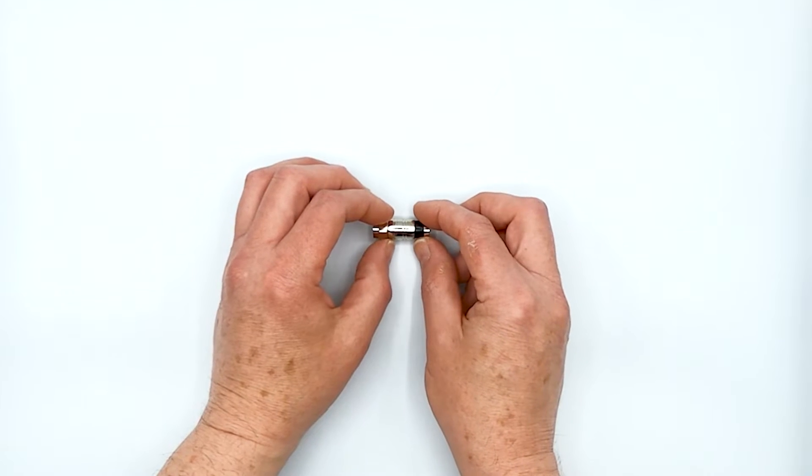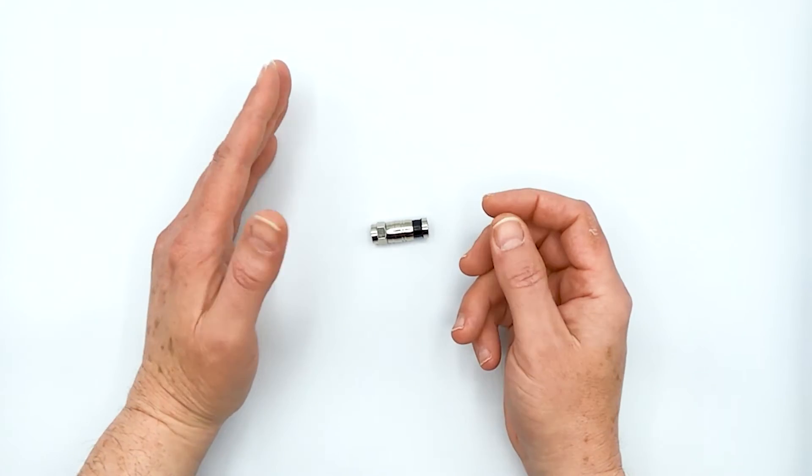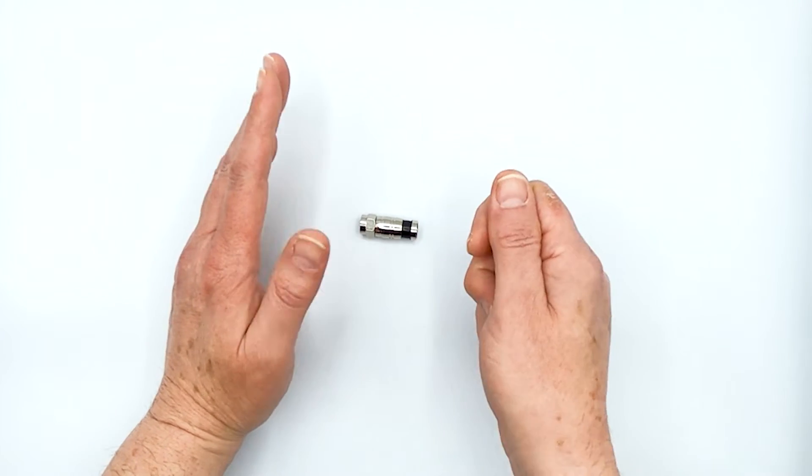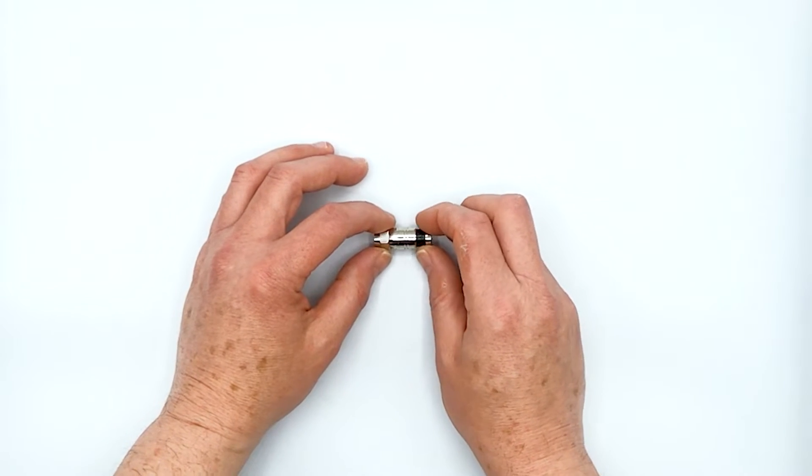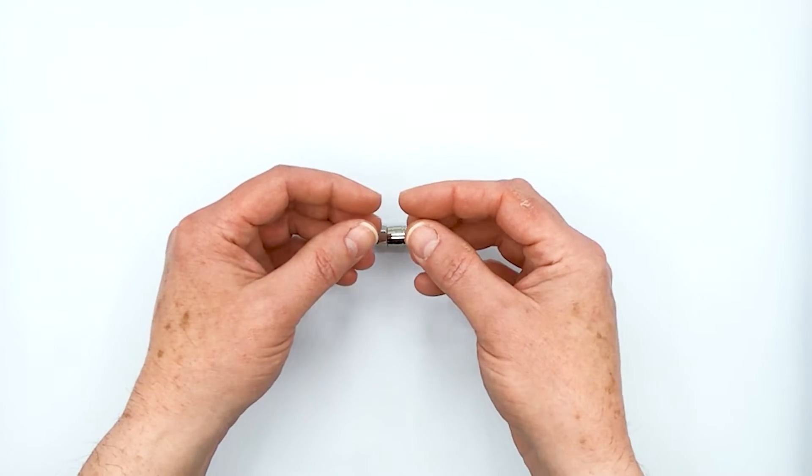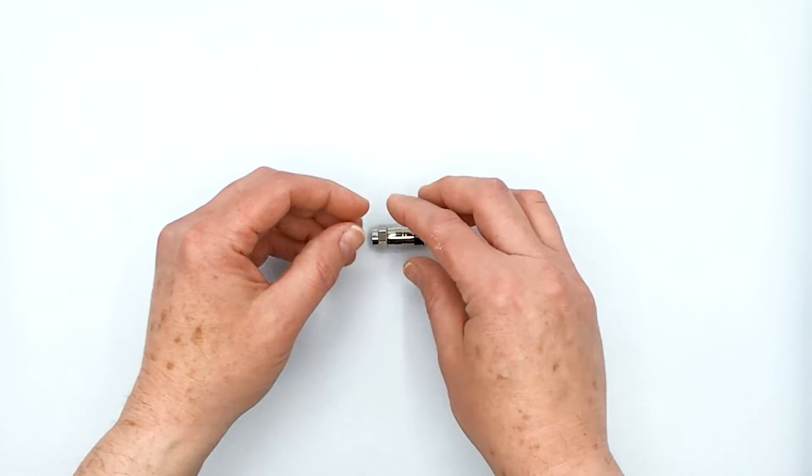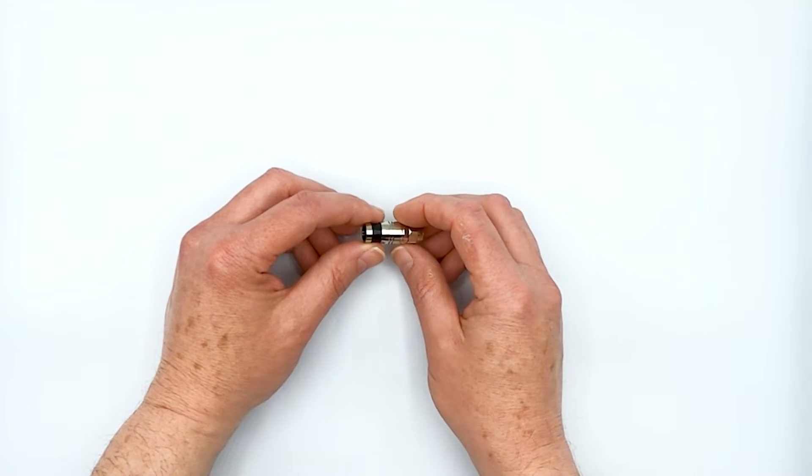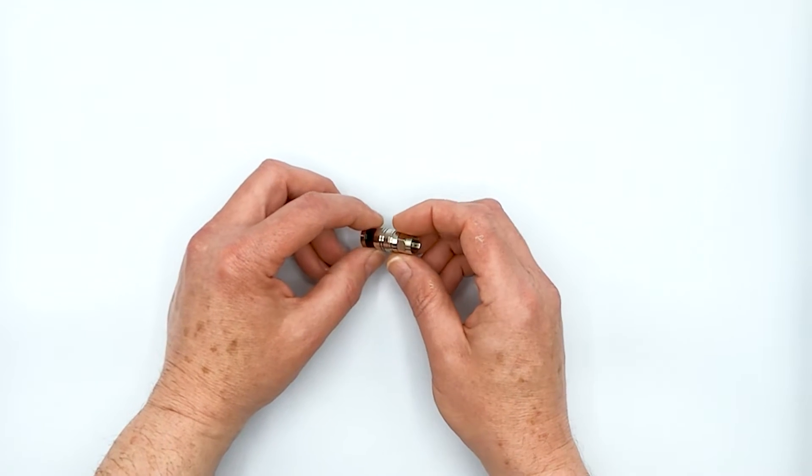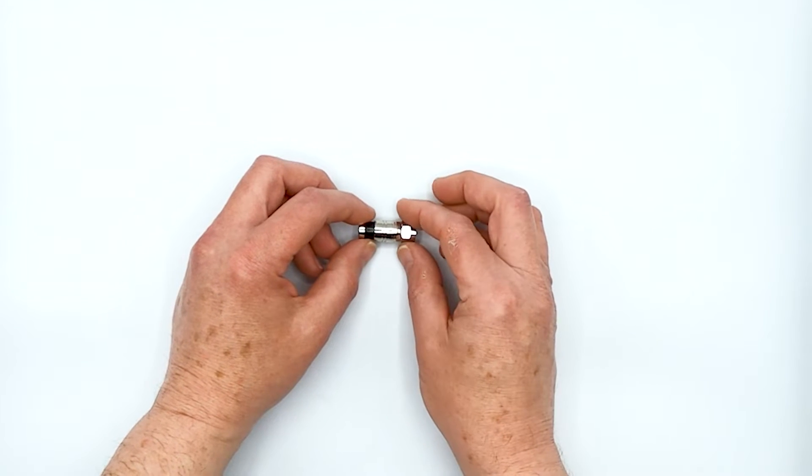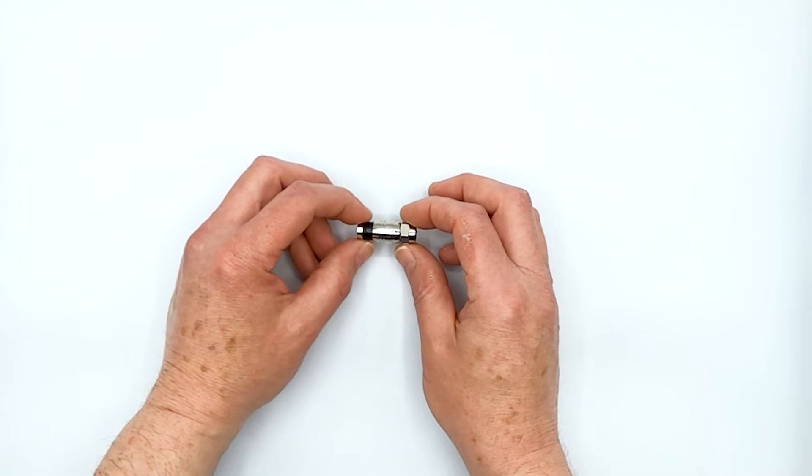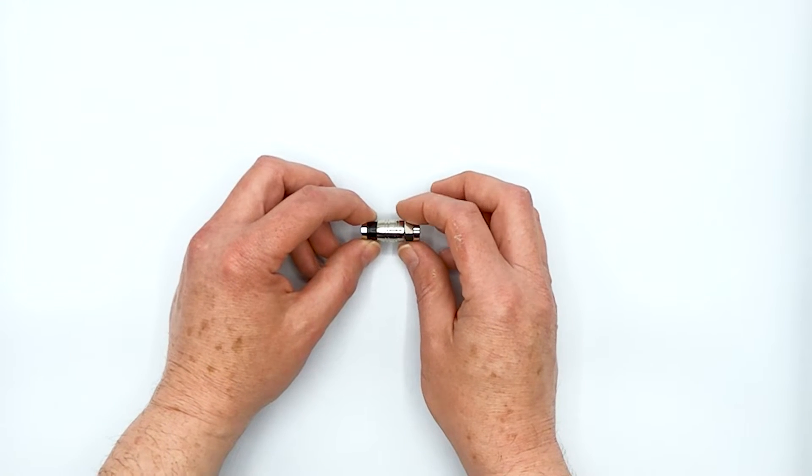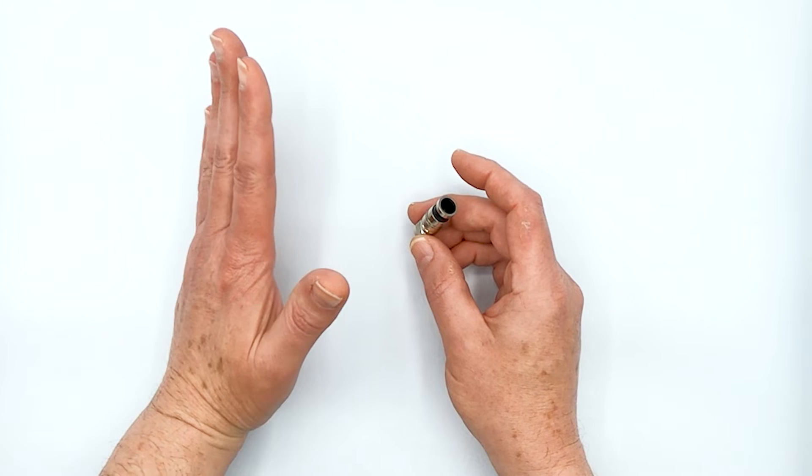And traditional F connectors require, they have a sleeve mechanism that requires you to use a flaring tool, in a lot of cases, in order to expand the jacket on the coaxial cable so that you can actually get the F connector on. Now, using a flaring tool, if it's properly fit for your cable, requires a lot of force. And that's not exactly a fun task. And it leads to a lot of people getting their hands cut or punctured.